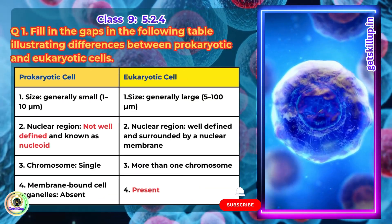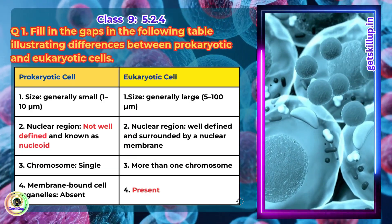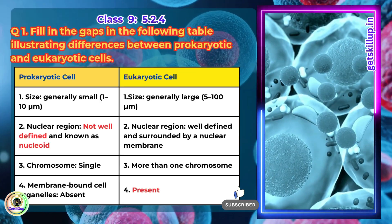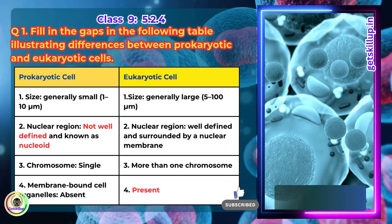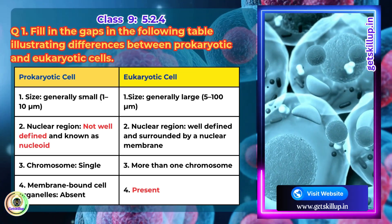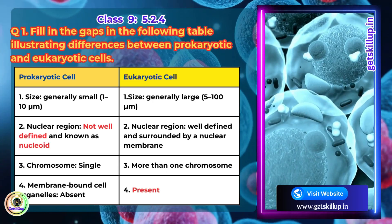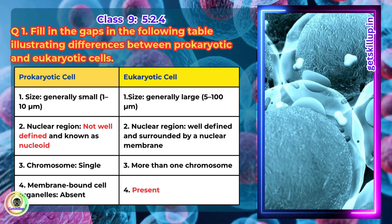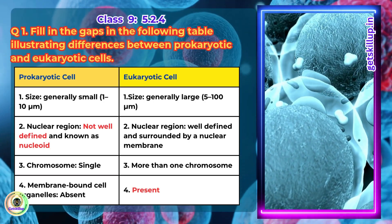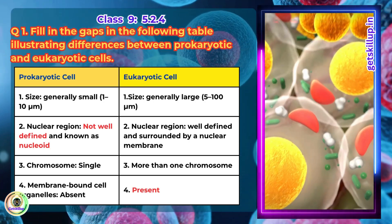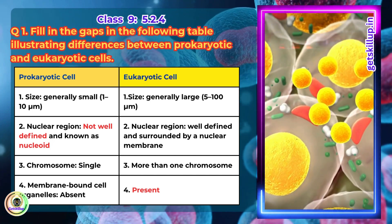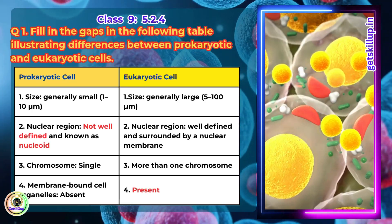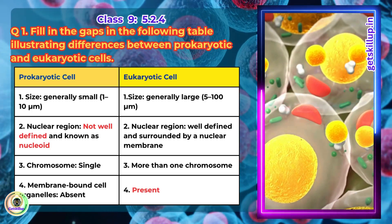Prokaryotic cell size is generally small, whereas eukaryotic cell size is generally large. The prokaryotic nuclear region is not well defined and is known as the nucleoid, while the eukaryotic nuclear region is well defined and surrounded by a nuclear membrane. Prokaryotic cells have a single chromosome, whereas eukaryotic cells have more than one chromosome. Membrane-bound cell organelles are absent in prokaryotic cells but present in eukaryotic cells.